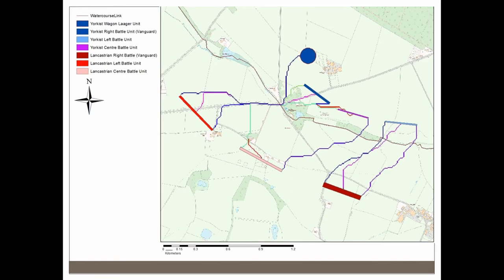This is the least cost path analysis, indicating where — based on topography alone — you would naturally move in the landscape. Interestingly, there is a natural path roughly where the modern road is. The topographical map does not account for the road's location; this is wholly based on topography. What it also demonstrates is that attacking head-on across the river in the centre of the battlefield is actually quite difficult, at least according to the analysis.